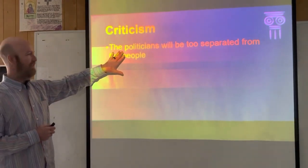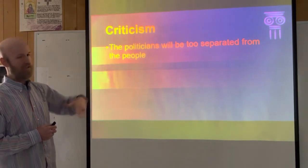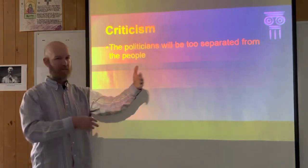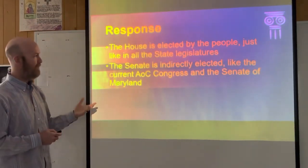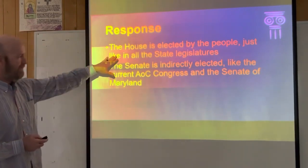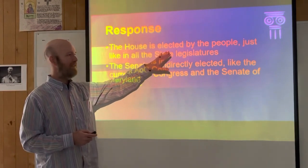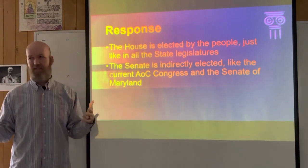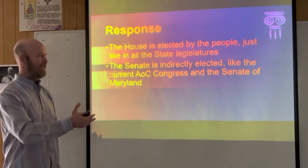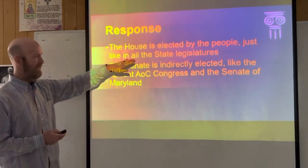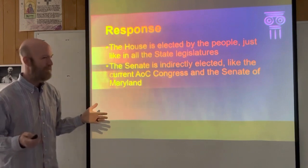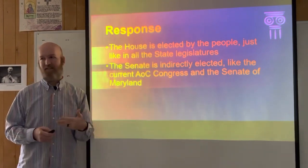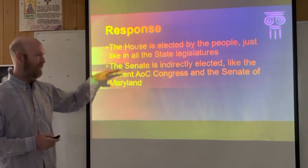Another criticism they were addressing was that politicians would be too separated in the national government and wouldn't truly represent the people because they're way over in Washington, D.C. Their response in Federalist 39 is that the House of Representatives is directly elected by the people. They compared it to different states and noted all the states in the country at that point also had a House of Representatives elected by the people. So they argued: if you say the U.S. House of Representatives is not Republican, then you'd also have to say every state is not Republican.